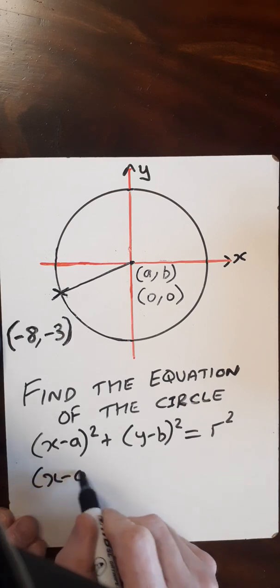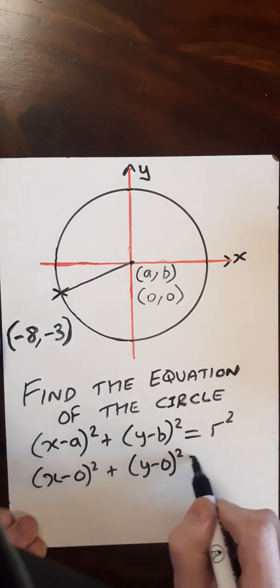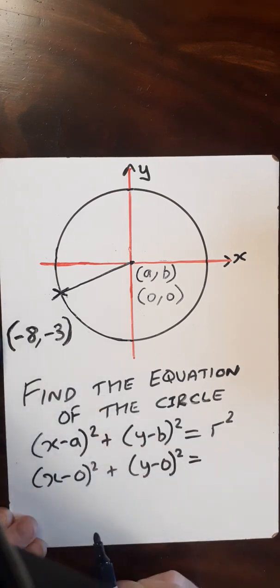So I can just put those in for now. So (x-0)² + (y-0)² equals, now we need to find the radius.